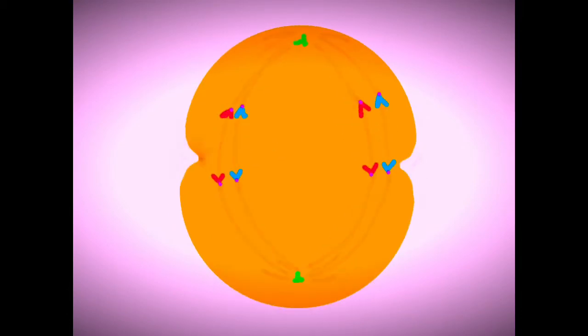In early anaphase, the centrioles split half the chromosomes, move to one pole, half to the other pole. In late anaphase, the chromosomes have also reached their respective poles.